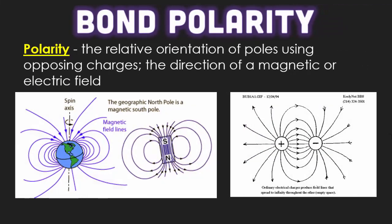So just to recap, bond polarity is the relative orientation of a positive and negative attraction on a piece of matter. So for example, our planet has two poles, a north and south pole, a positive and negative side.